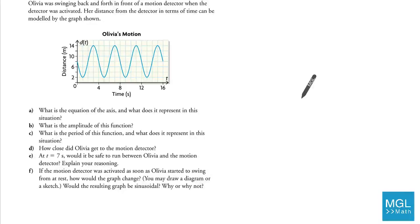Olivia was swinging back and forth in front of a motion detector when the detector was activated. Her distance from the detector in terms of time can be modeled by the graph shown. Okay, so there's a detector here and Olivia was swinging back and forth like this.